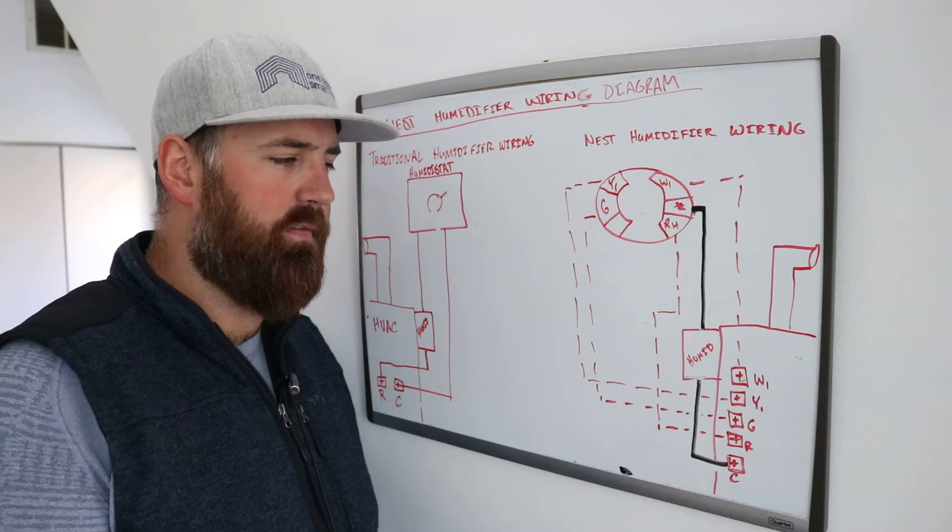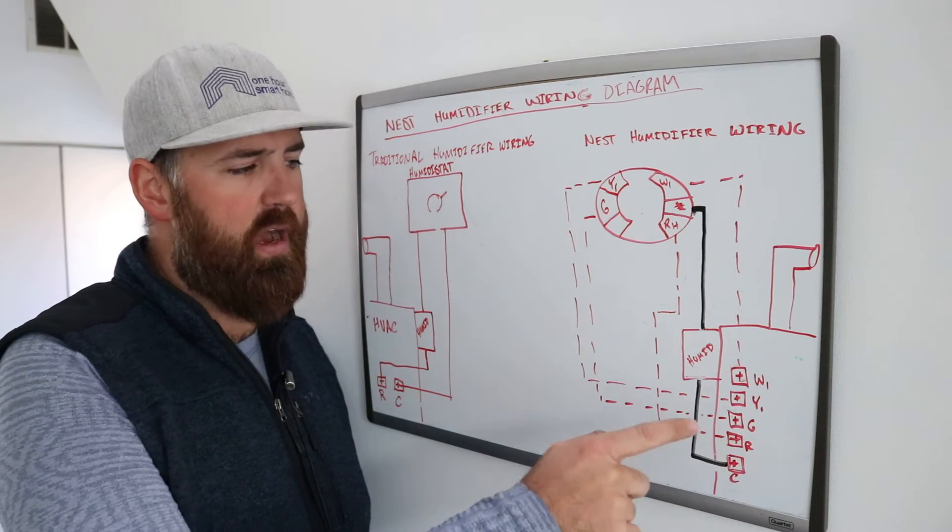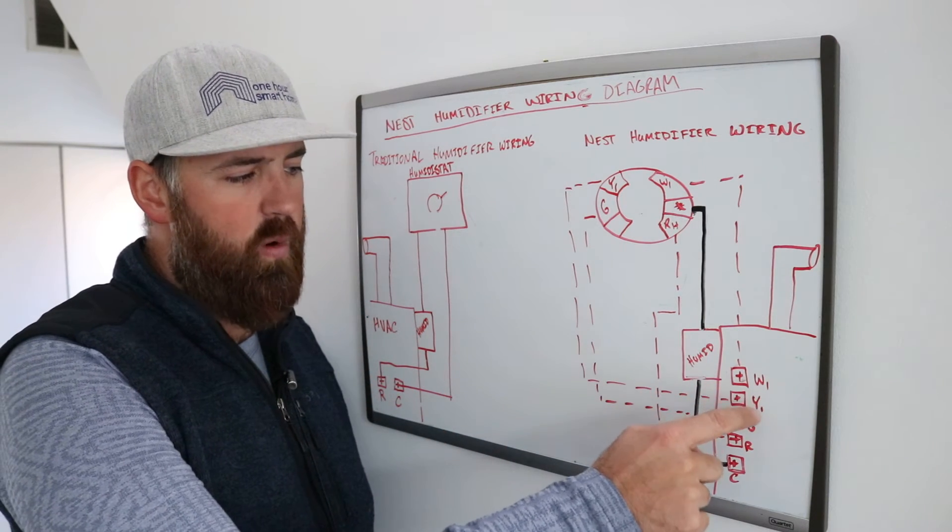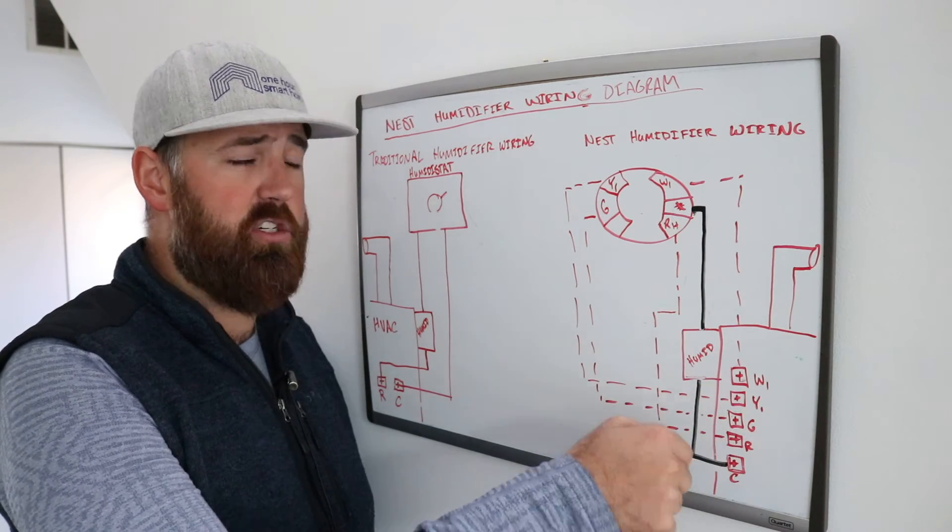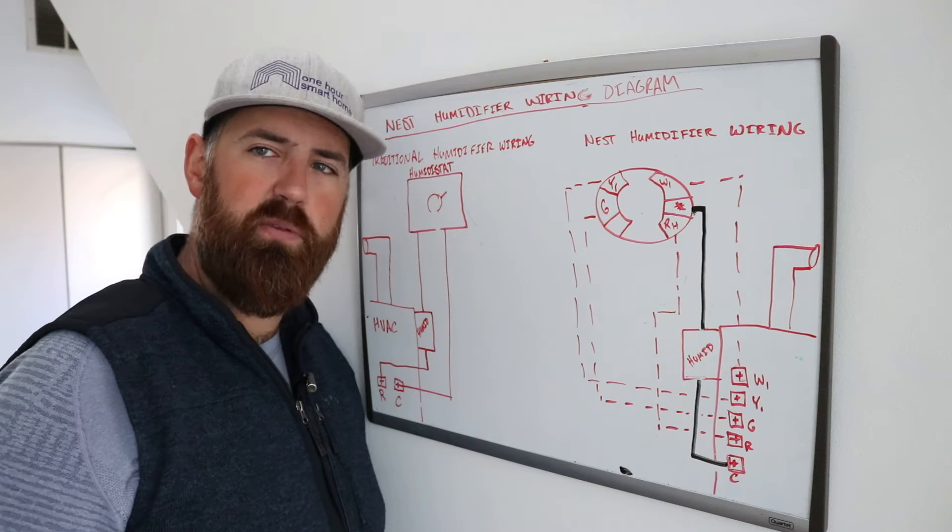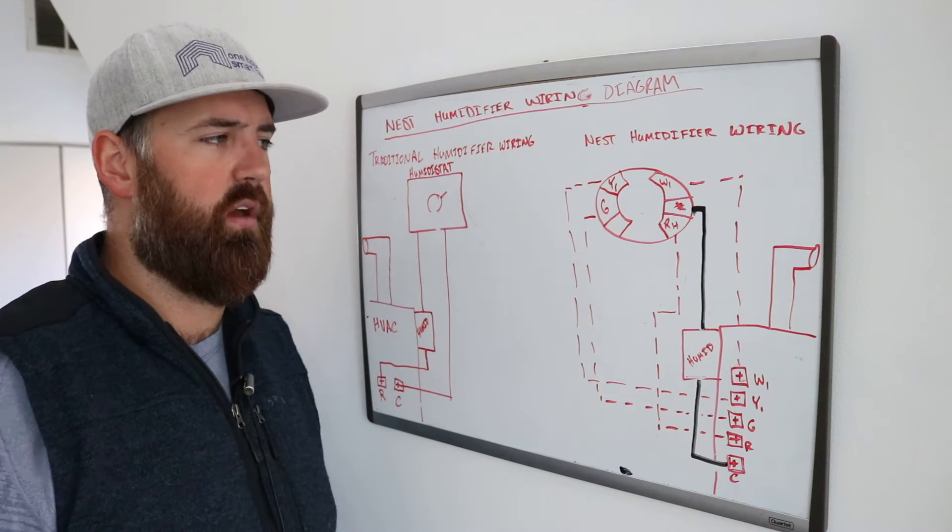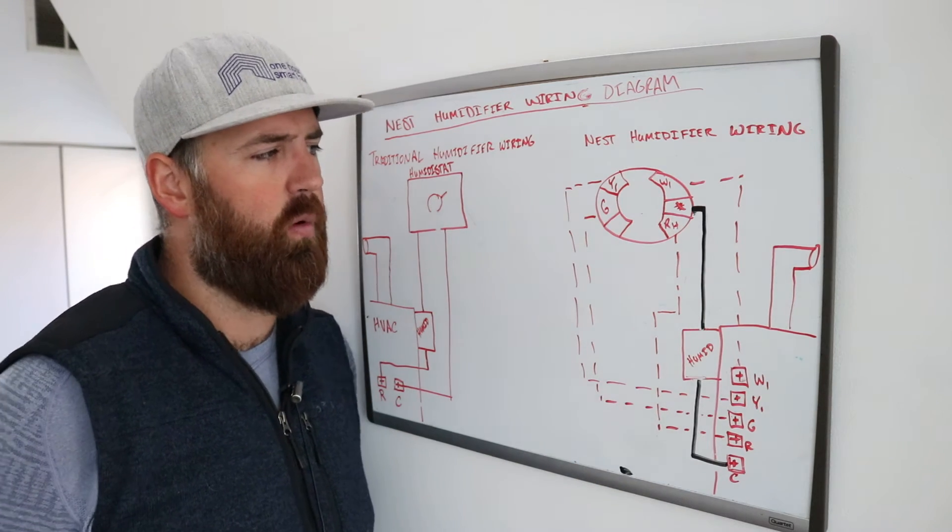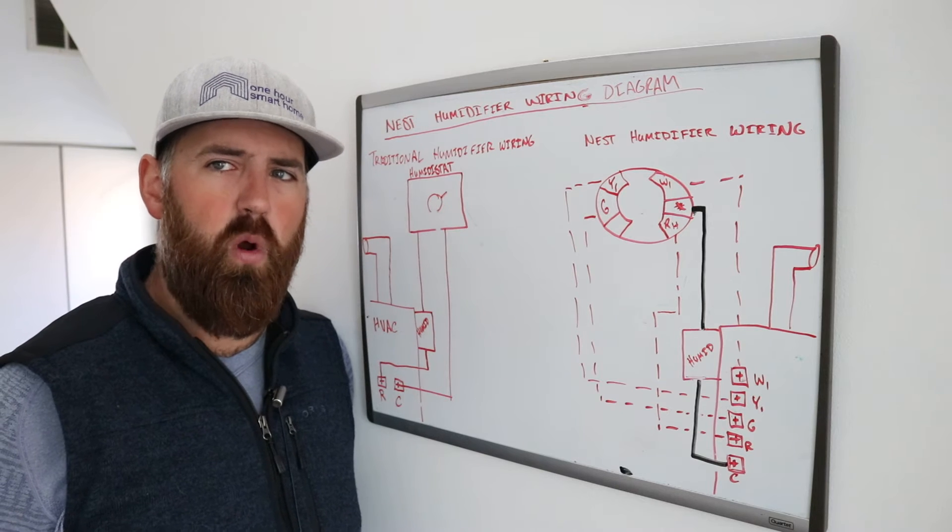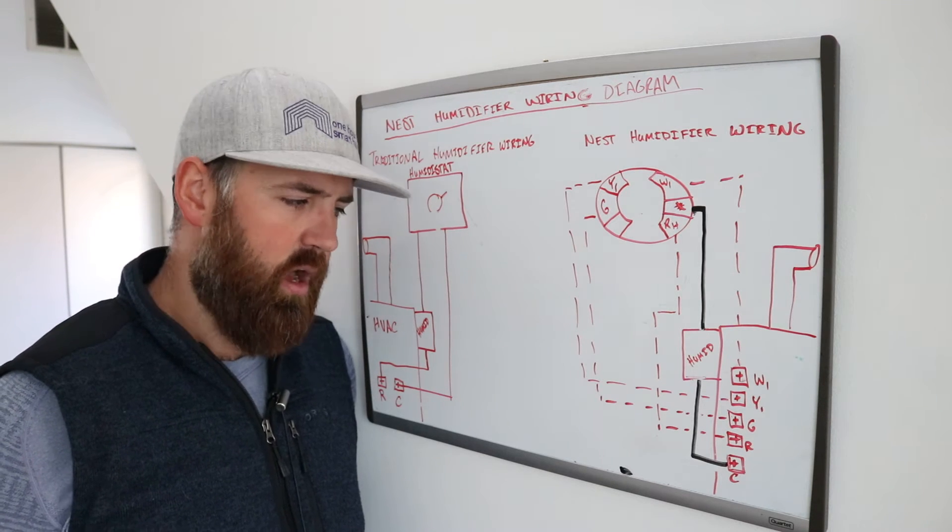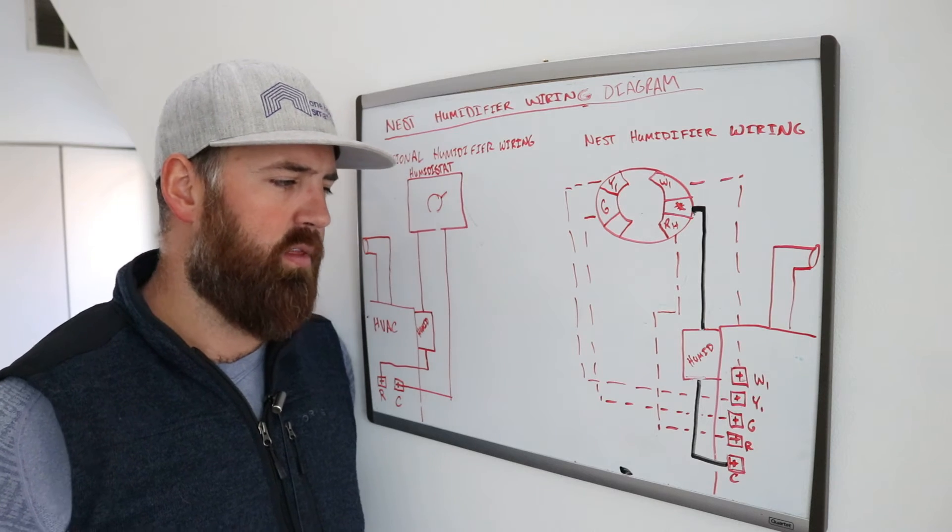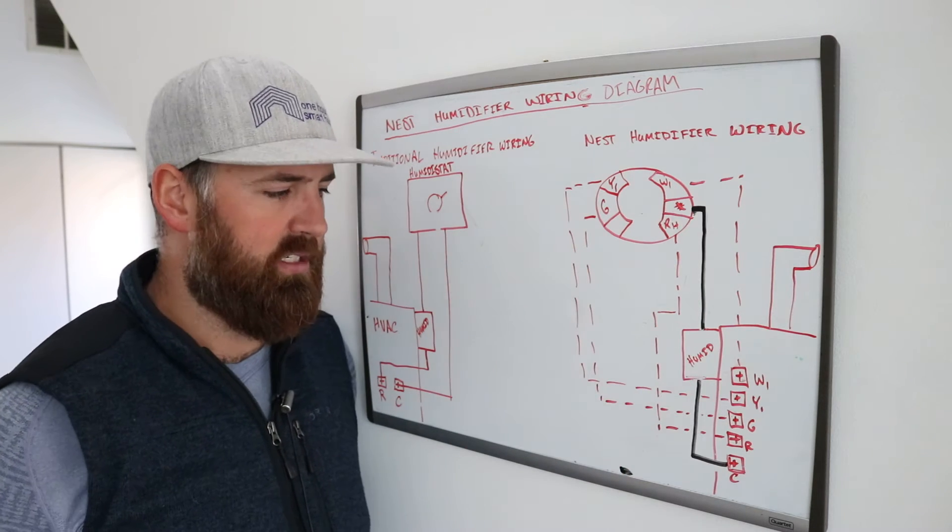So what you've got for a Nest, just typical wiring, you're going to have W1 which is your heat wire, Y1 which is your AC wire, G which is your fan wire and R which is the power wire. Those are just all in dotted lines because they're kind of irrelevant to how the humidistat humidifier works with a Nest but those are what power your Nest and allow it to turn on and off. The R wire is technically the power but all these other ones are just needed for your thermostat to function.